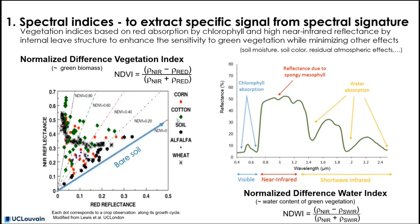Indeed, when bare soil is observed, all reflectance values align in the scatter plot of red reflectance versus near-infrared reflectance along the diagonal, which is what we call the bare soil line. The NDVI is around zero. As soon as the crop develops, it will become greener and the NDVI will increase according to an increased angle, up to an NDVI of 0.8.